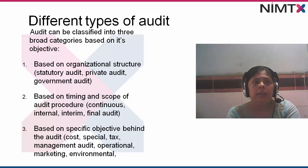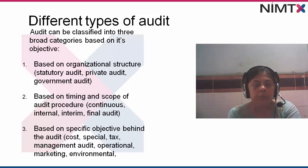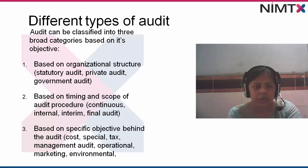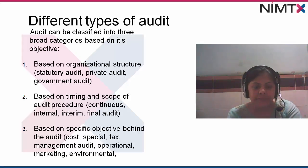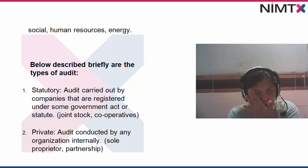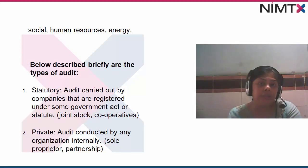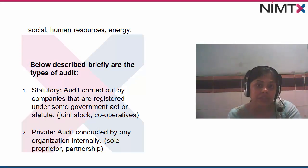Based on specific objectives: Cost audit — checking the cost, for example if an organization can produce a good for two or three rupees and sell it for forty rupees, the auditor checks the cost to verify this. Special audit — any specific kind of audit. Tax audit. Management audit — evaluating the performance of management functions. Operational audit — internal audit to assess the efficiency of various areas of management. Marketing audit — to identify marketing problems and take remedial actions. Environmental audit — whether you are adhering to the environmental laws of the country. Security audit. Social audit. Human resources audit. Energy audit — whether energy resources are being used optimally.